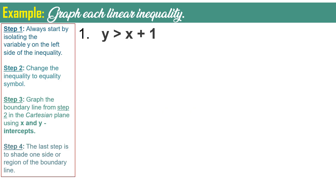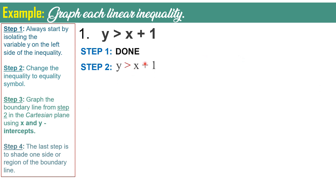Let us have the first example. To graph this linear inequality, let us use these steps. Step 1: always start by isolating the variable Y on the left side of the inequality. As you can see, in our given inequality, Y is already isolated on the left side. Therefore, step 1 is already done. Second step: change the inequality to an equality symbol. The inequality is Y greater than X plus 1. Remove the greater than symbol and change it into an equal sign so that we can solve for the intercepts.